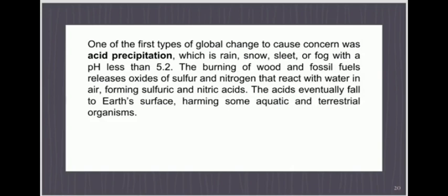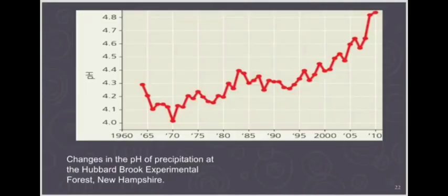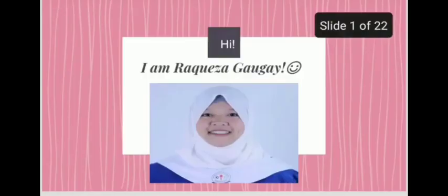The acids fall to Earth's surface, harming aquatic and terrestrial organisms. In the 1960s, ecologists determined that lake-dwelling organisms in eastern Canada were dying due to air pollution from Midwestern U.S. factories. Newly hatched lake trout died when pH dropped below 5.4. Lakes and streams in Norway and Sweden were losing fish because of pollution from Britain and Central Europe. By 1980, the pH of precipitation in large areas of North America and Europe averaged 4.0 to 4.5. I am Rekiza C. Gaugay and the next topic will be discussed by my groupmate.